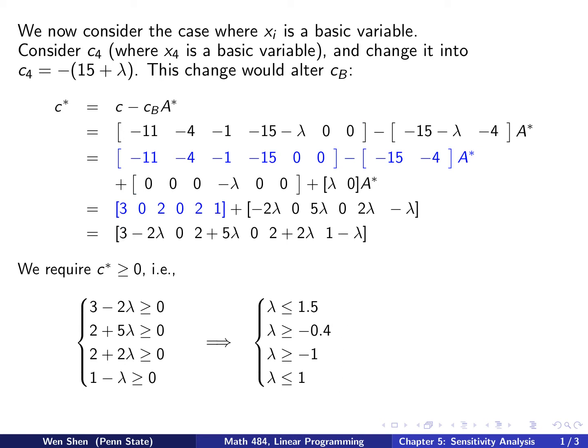So look at the less than sign, lambda less than 1.5, lambda less than 1 must be satisfied, both, and then you conclude lambda has to be less than 1. And then here, lambda is bigger than negative 0.5, lambda is bigger than negative 1, then you conclude lambda must be bigger than negative 0.4. So finally, we conclude that if you want C star to be non-negative, lambda must lie between negative 0.4 and 1.